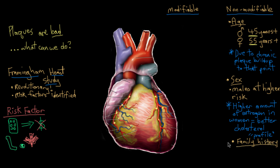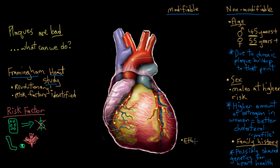Another non-modifiable risk factor is family history. If a first-degree relative had coronary heart disease or any other type of heart disease, you would probably be at increased risk as well — because you share a lot of genetic material, and we know that coronary heart disease has a lot of genetic influence. One more non-modifiable factor is ethnicity: certain ethnicities are indirectly at higher risk. People of African descent tend to have higher rates of hypertension than people of non-African descent, and hypertension is a well-characterized risk factor for coronary artery disease.